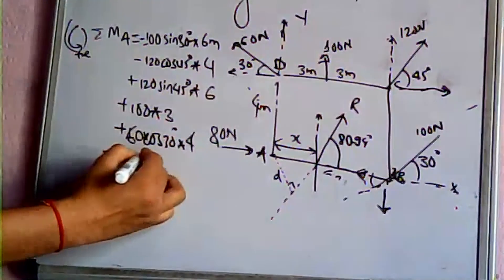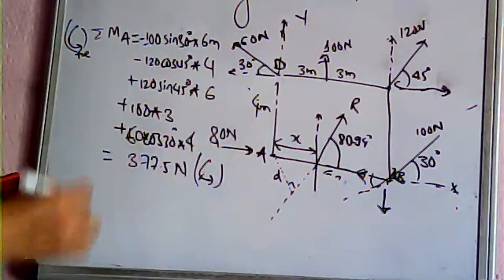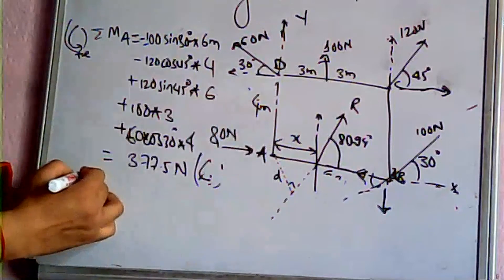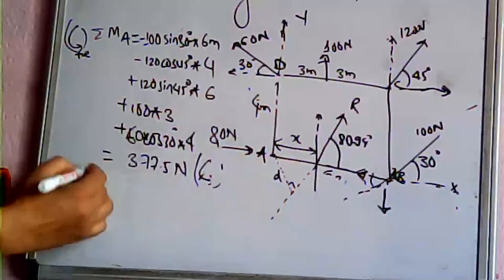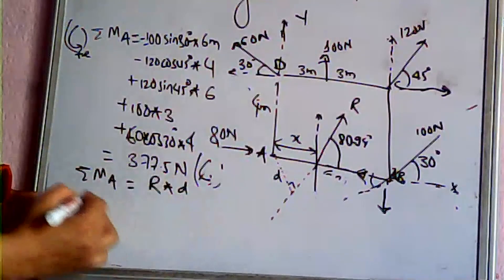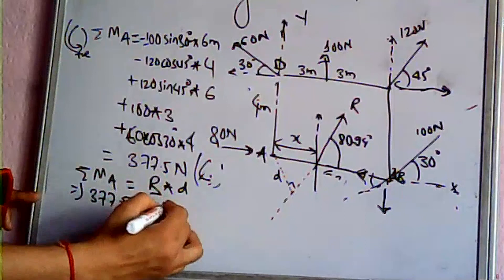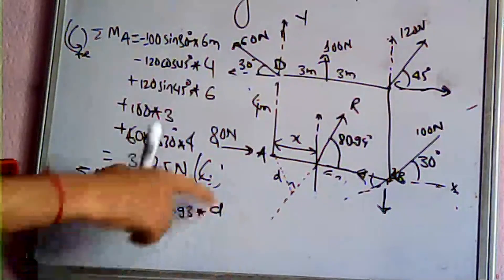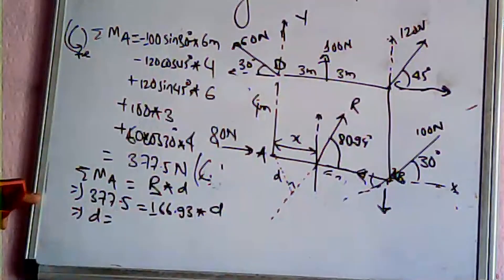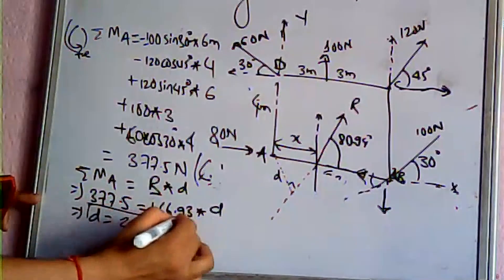Solving all terms, the total anticlockwise moment is 377.5 newton-meters. The anticlockwise moment gives a position of 2.26 meters. So 2.26 meters is the position of the resultant force from the reference point.